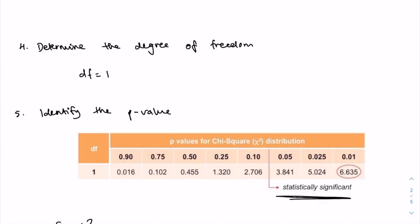To determine if the chi-squared value is statistically significant, a degree of freedom must first be identified. The degree of freedom is a mathematical term we don't need to know too much about in our syllabus. However, when testing for the association between two species, the degree of freedom is always 1. When testing for association between multiple species, the formula is: degree of freedom equals (m minus 1) times (n minus 1), where m and n are the number of rows and columns respectively.